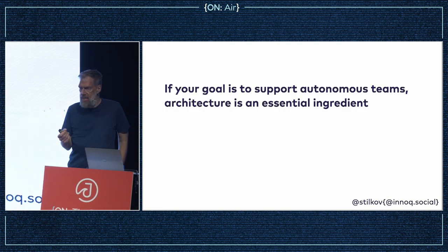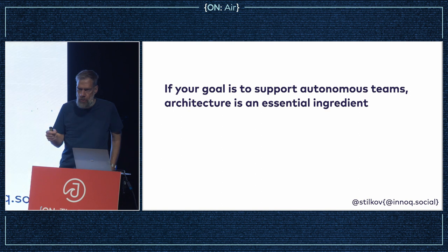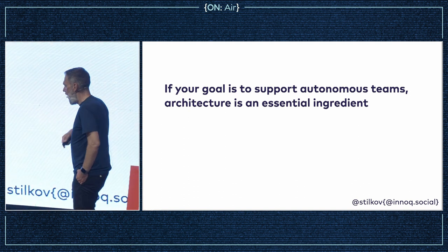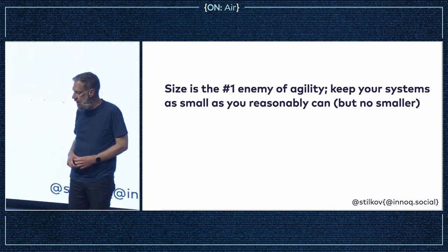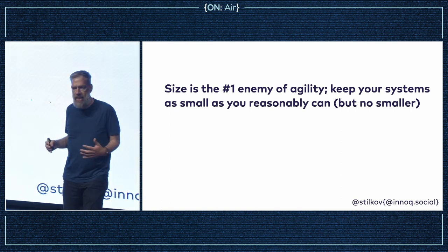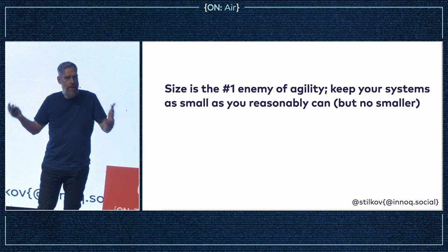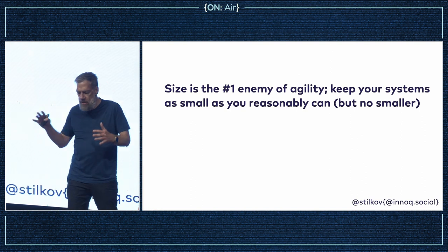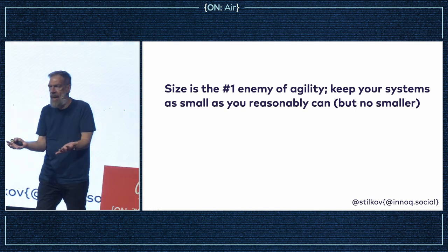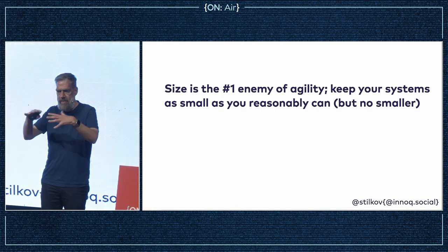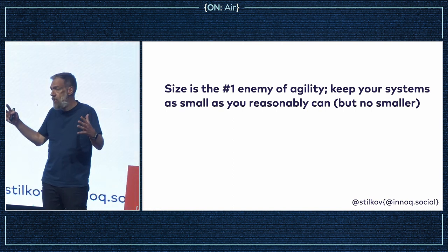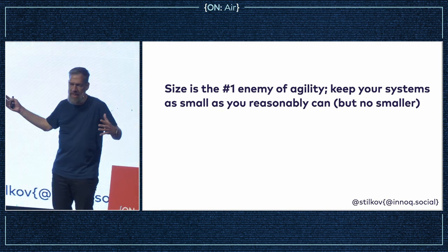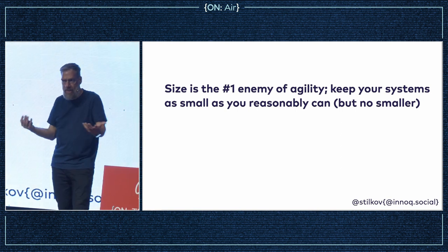If you want autonomous teams — and maybe you don't, but if you do — architecture is an essential ingredient. Size is the biggest enemy: you want to limit things to a manageable size. The Team Topologies people talk about cognitive load — maybe not the best metaphor, but there is a certain amount of work a team can handle. Once you exceed that, things go really bad. You can't have a team with 50 people — that's not a team, that's a disaster.